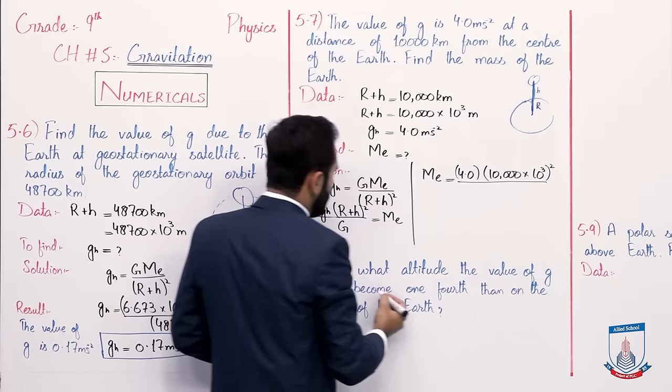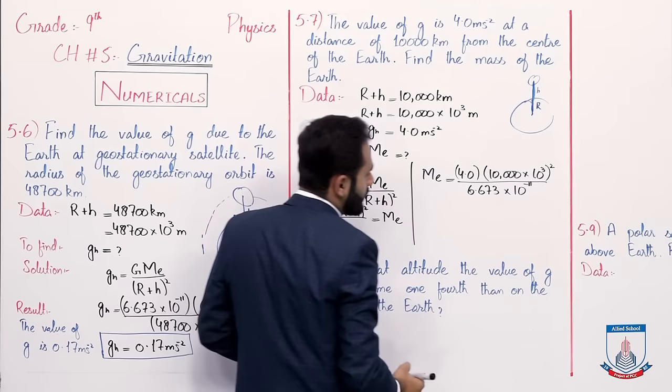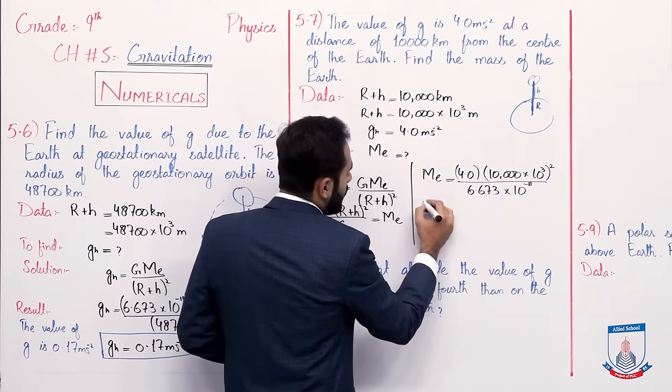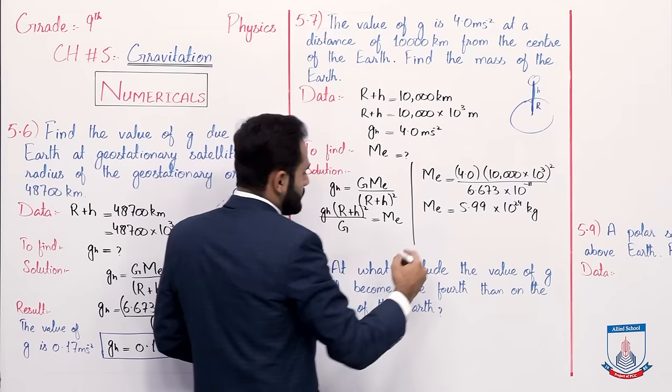Divided by G, the gravitational constant, which is 6.673 multiplied by 10 to the power minus 11. When we solve everything on the calculator, the mass of the Earth comes out to 5.99 multiplied by 10 to the power 24 kilogram. This is the final answer.